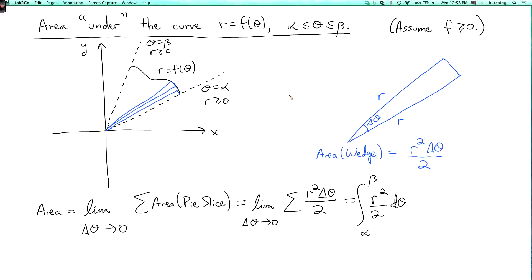Or in terms of our original function f, we could equivalently write this as the integral of f(θ)²/2 dθ. Okay, so this is the formula for the area in polar coordinates, and we'll see some interesting examples of this in the next lecture segment.